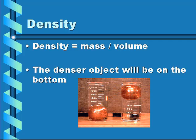Density is the mass of an object over its volume. The denser object will be on the bottom if they're placed on top of each other and they're both liquids, or one's a liquid and one's a solid. The density of an object does not change if it's in its same form, so it doesn't matter if I have 5 grams of a substance or 1,000 grams. If it's both in its solid form, it's going to have the same density.